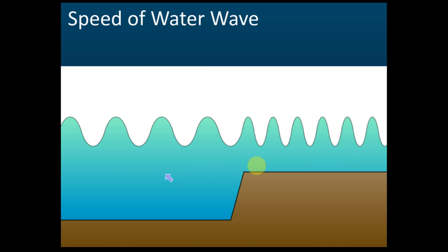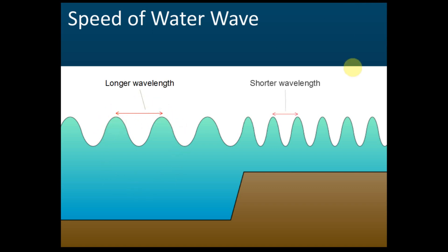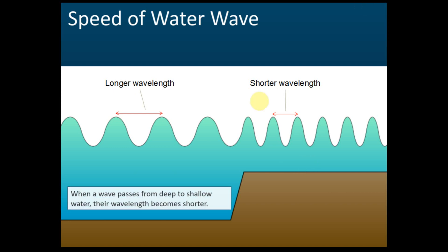This is a wave, this is water, and this is the base of the tank. From here we can see that at this region the water is deeper compared to this region, which is shallower. At the deeper region the wavelength is longer, and at the shallower region the wavelength is shorter. So the wavelength of a wave will change according to the depth of the water — the wavelength of a water wave will decrease if the depth of the water decreases.